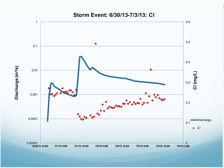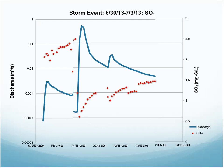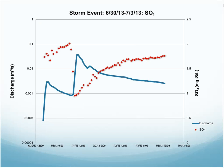We see a similar response for sulfate ions — pretty much the exact same response. Again, the August storm and the July storm: when stream discharge is at its peak, the concentration of ions is at its lowest point. But as discharge begins to decrease and the storm is coming to an end, the concentration of sulfate ions begins to stabilize and work its way back to where it was prior to the event.